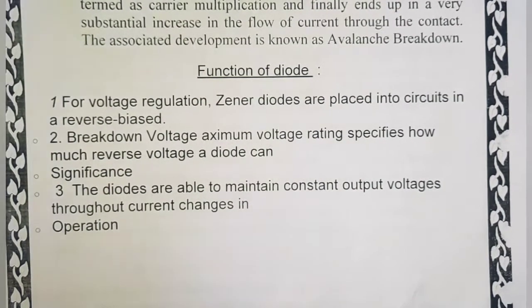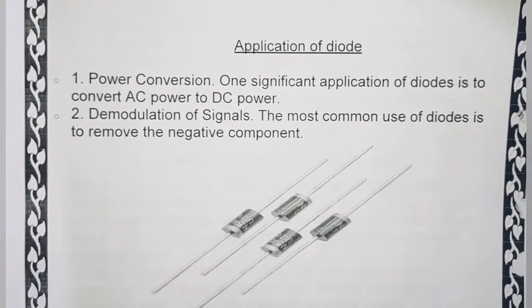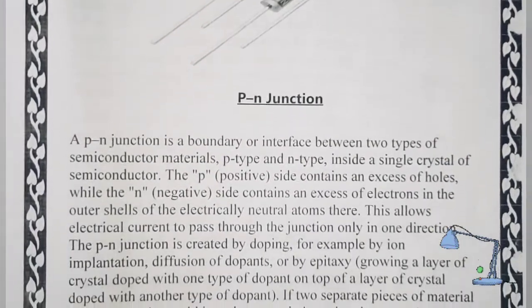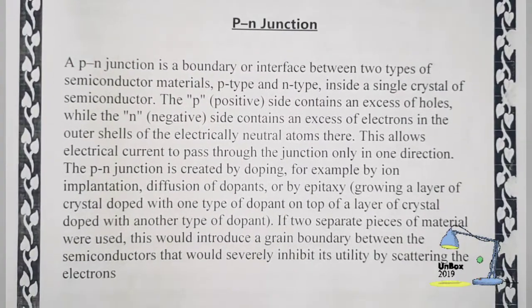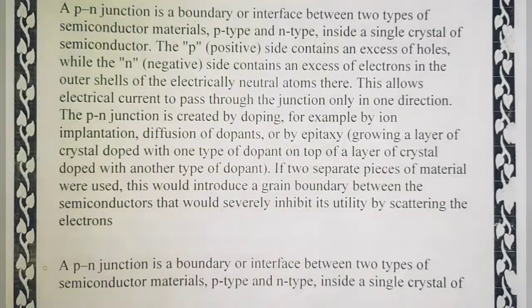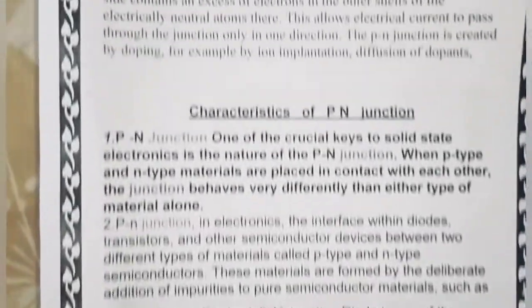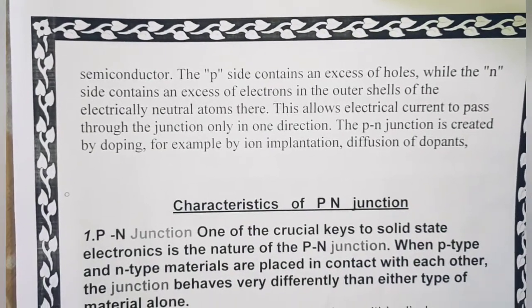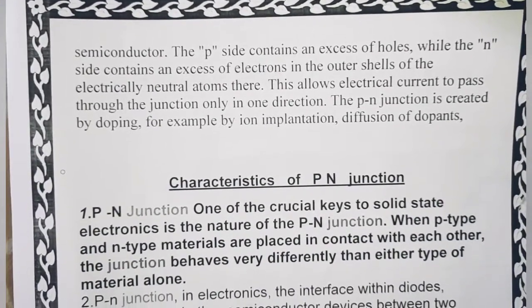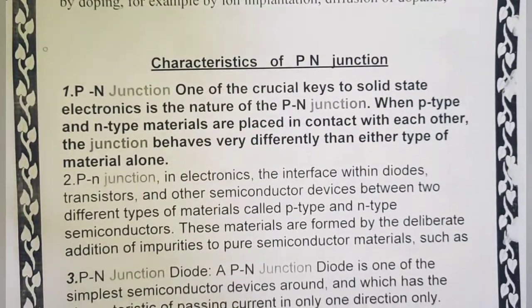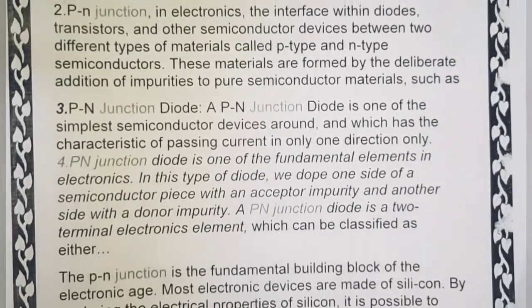Next है application part, application of diode। PN junction यहाँ mention है physics के अंदर। आपको पता होगा कि physics और chemistry के अंदर भी PN junction वाला part मिल जाता है, थोड़ा बहुत solid state के अंदर। यह PN junction की characteristics बताई गई हैं — यह वाला part भी add किया जा सकता है।